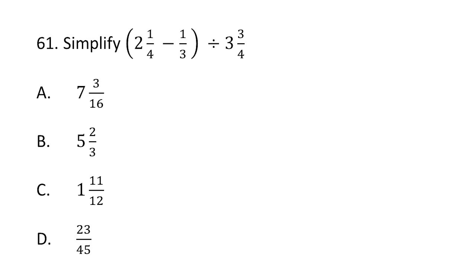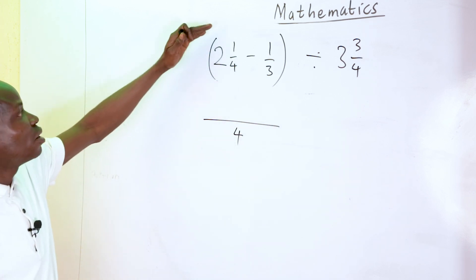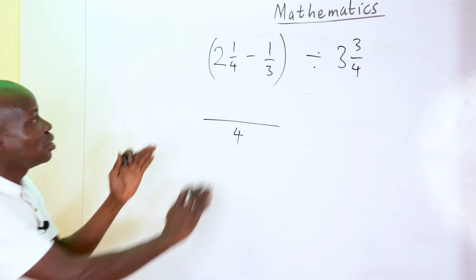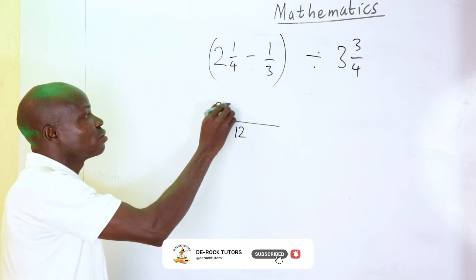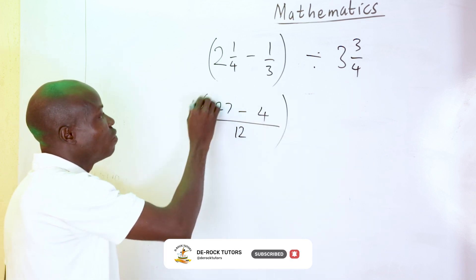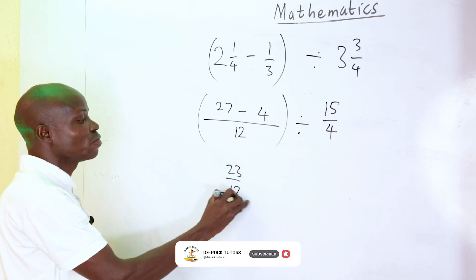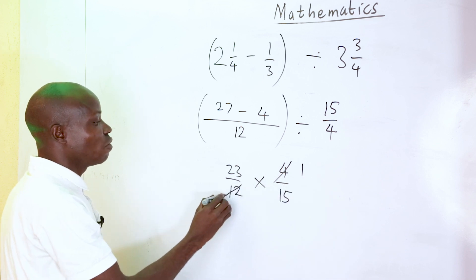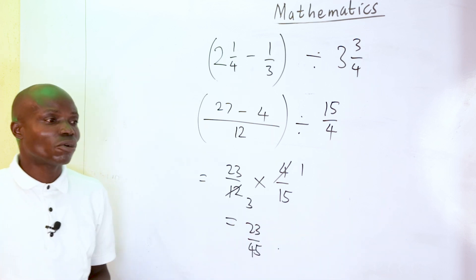Question 61: evaluate 2 and 1/4 minus 1/3, divided by 3 and 3/4. Handling the bracket first, 2 and 1/4 is 9/4. Using LCM of 12: (3 times 9 minus 4) over 12 gives 23 over 12. Then dividing by 3 and 3/4, which is 15/4, we multiply by 4 over 15. Simplifying gives 23 over 45. The correct option is D.